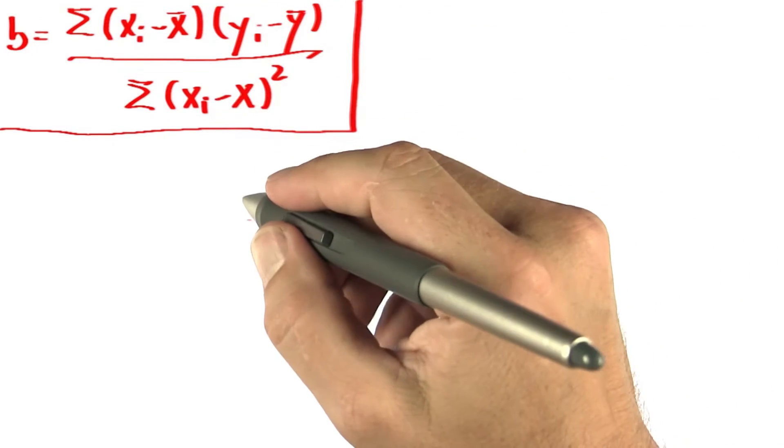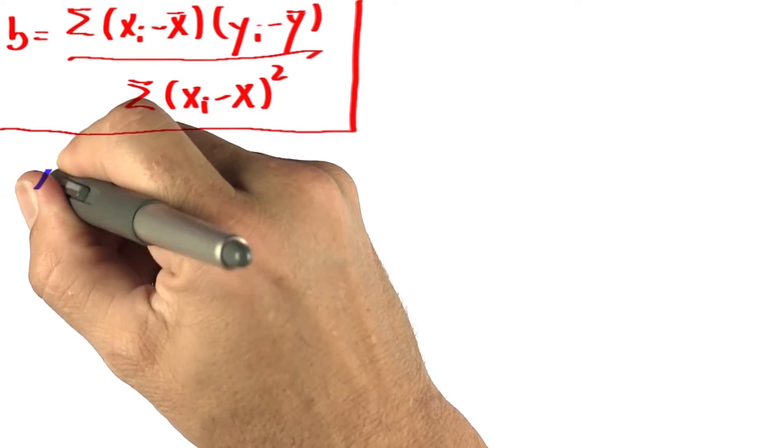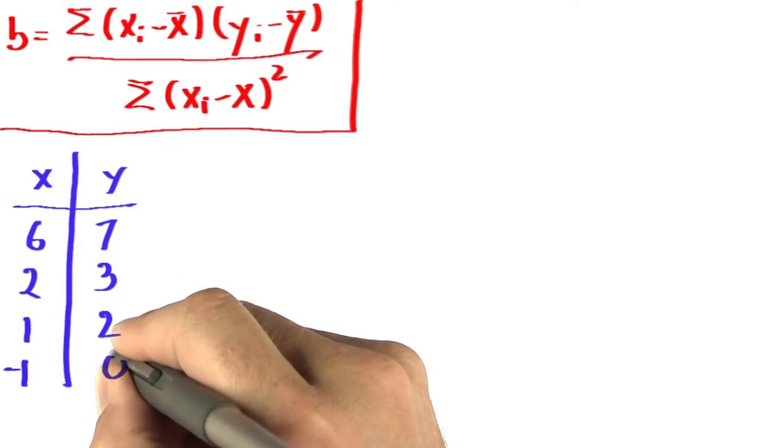So here's our formula again. Let's assume I have the following data. There's an x variable, a y variable, and we have four data points.